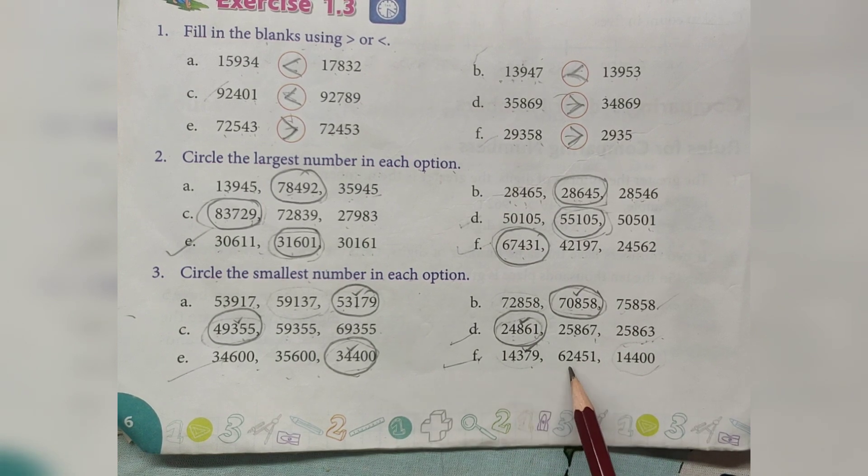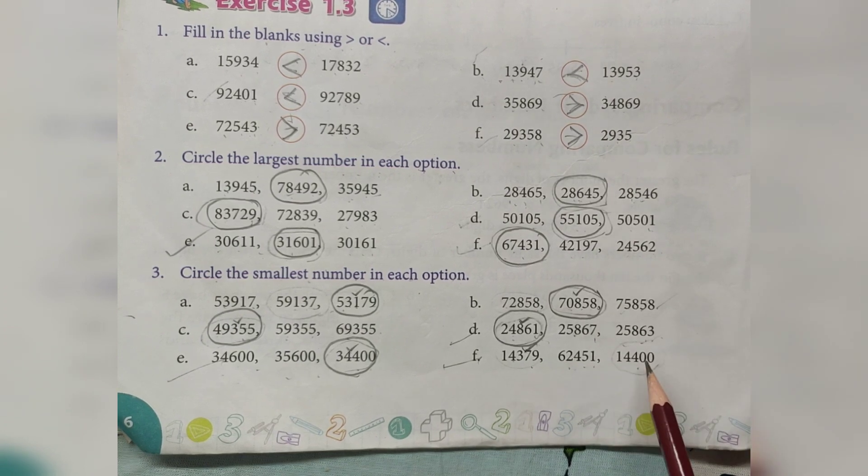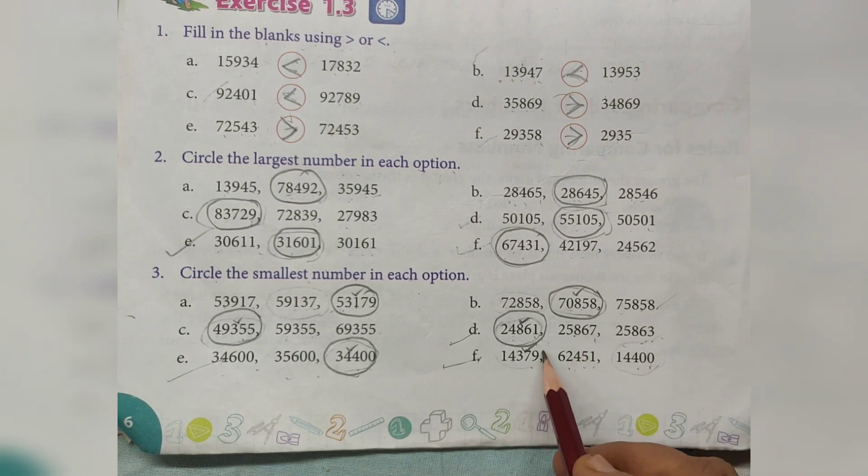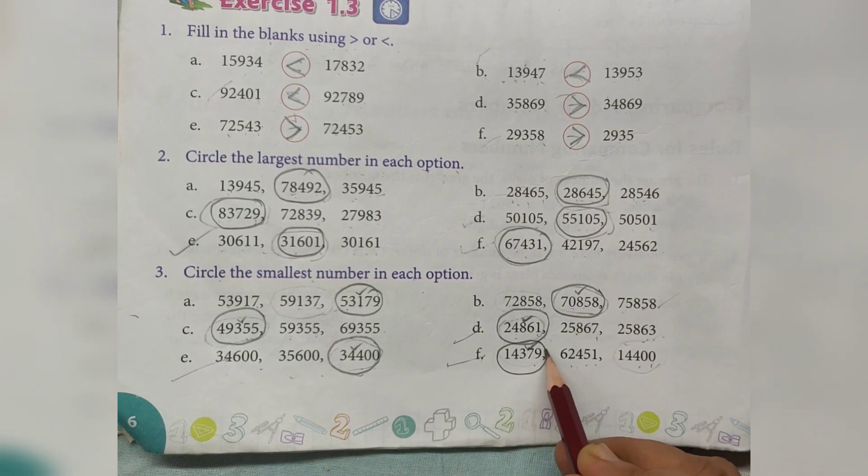14,379, 62,451, 14,400. Smallest number? 14,379.